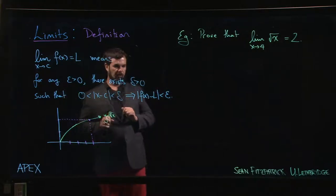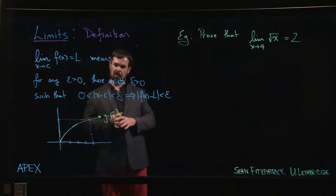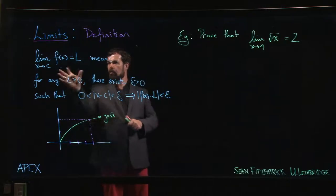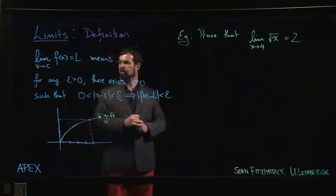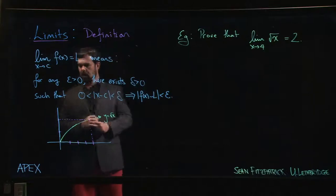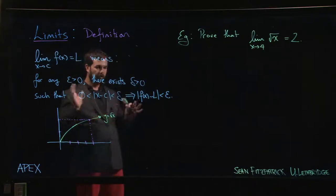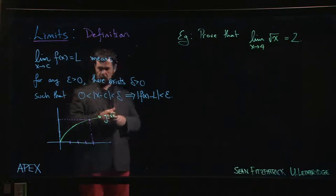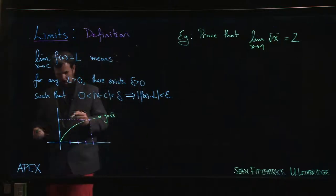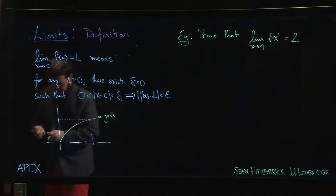We've restated an abridged version of that definition here. When we say that the limit of some function is L as x approaches c, we're saying that for any epsilon—epsilon is some number which represents an error or a tolerance.